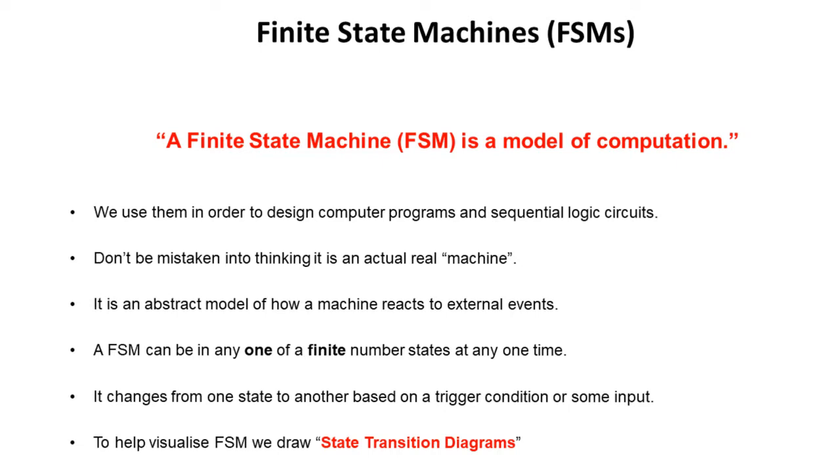A finite state machine can be in any single one of a finite number of states at any given time. It changes from one state to another based on some kind of trigger condition or an input, and to help visualize them we draw what are called state transition diagrams.